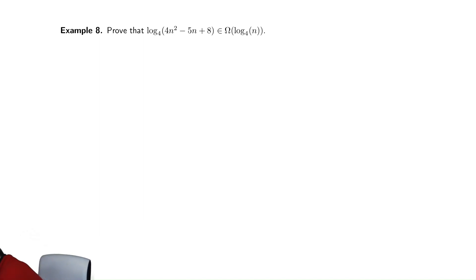So, let's begin by applying the rules that we learned in our first couple of examples. We start with the given expression, log base 4 of 4n² minus 5n plus 8. We drop the positive values that are lower order terms. So, we drop the 8, and we're left with 4n² minus 5n.